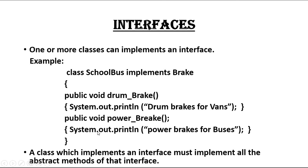If a class implements an interface, that class must implement all the abstract methods in that interface. For example, if an interface contains three abstract methods, then any class that implements that interface must implement all three of those abstract methods.